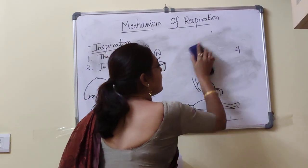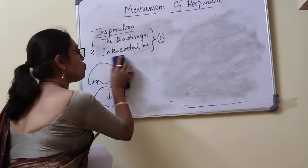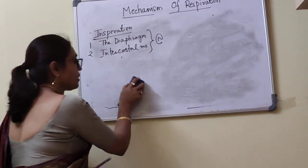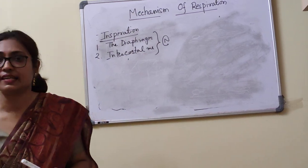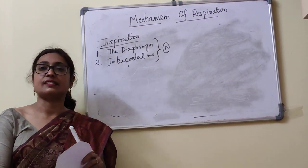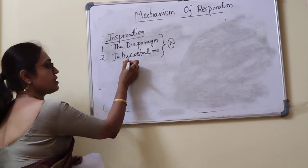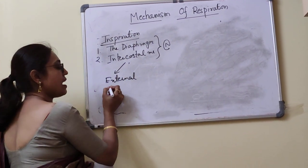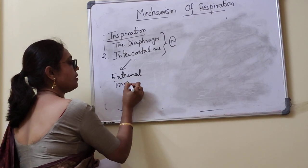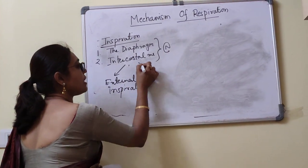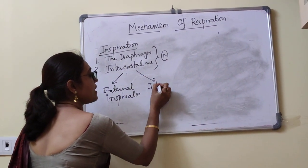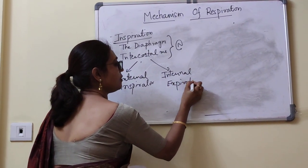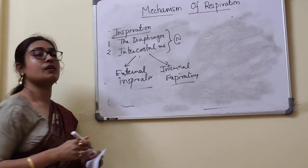There are mainly two intercostal muscles: the external intercostal and the internal intercostal. The external intercostal is an inspiratory muscle and the internal intercostal is actually an expiratory muscle.